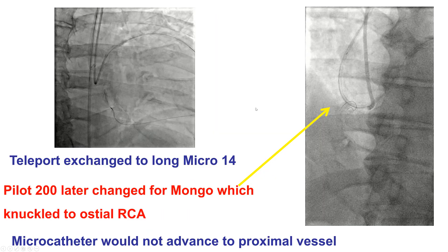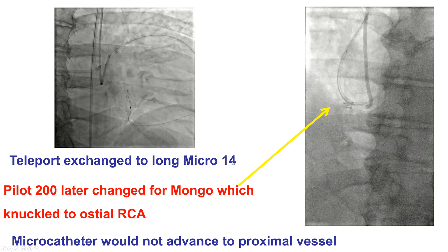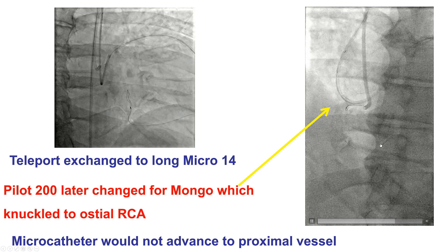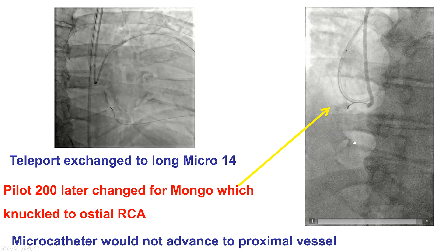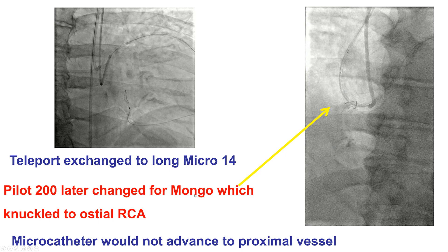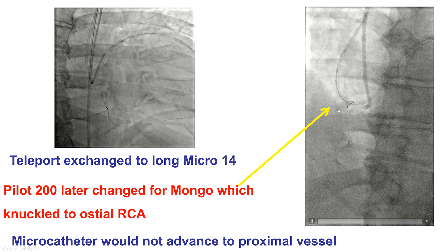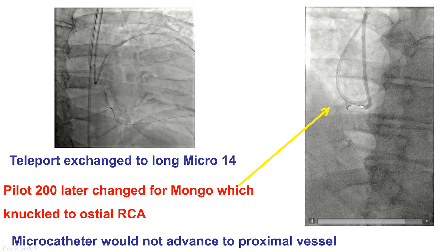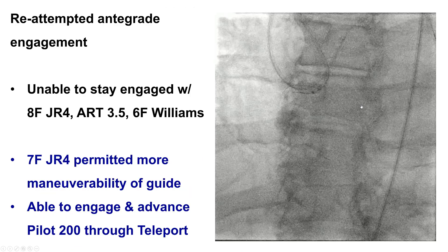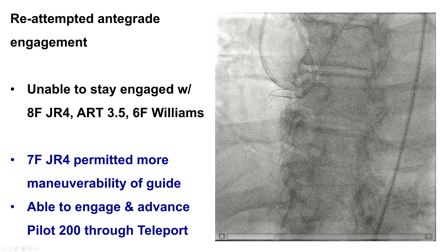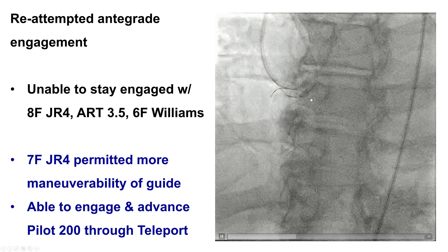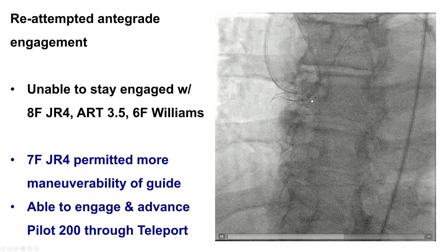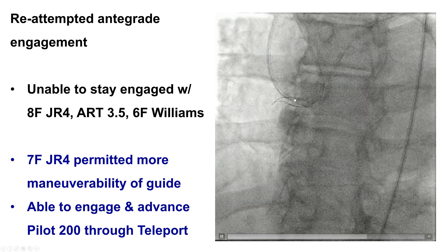What to do next? There is one microcatheter, the Micro-14, that is longer at 155 cm, and we were able to use that to go a little further into the right coronary artery. We then switched to the Gladius Mongo, which was advanced all the way to the right coronary artery ostium. We could not get the microcatheter to go further, so we had to work antegrade, but now we had a better understanding of the course of the vessel given the retrograde gear.